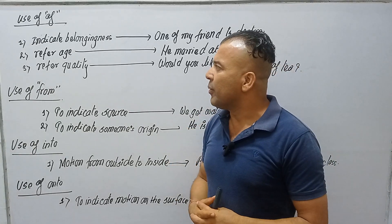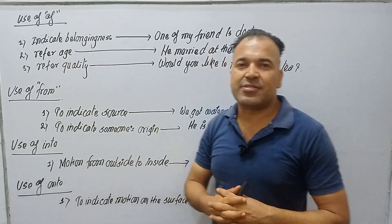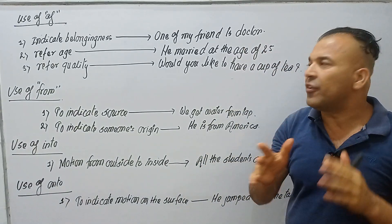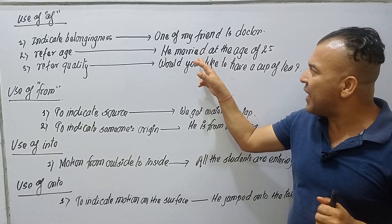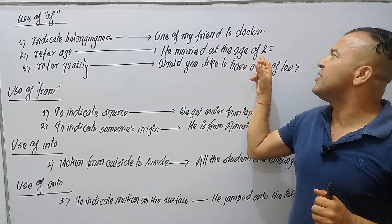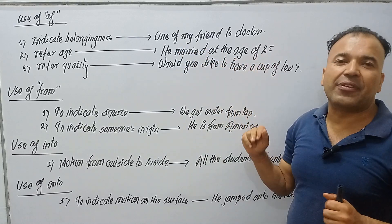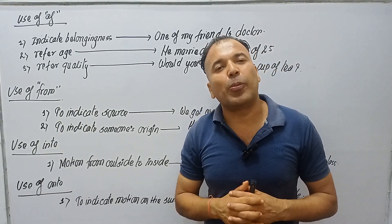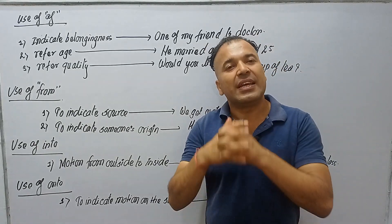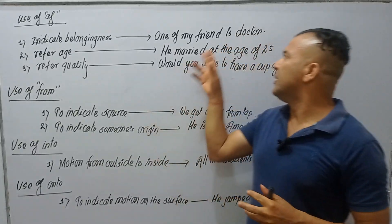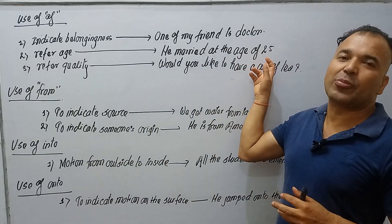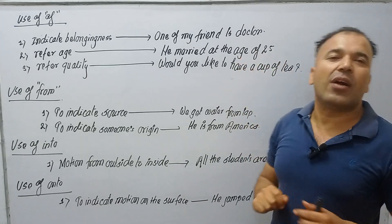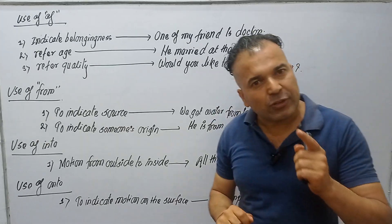OF is also used to refer to age. For example: 'He married at the age of 25.' Here, OF is used as an indication of the age at which he married.